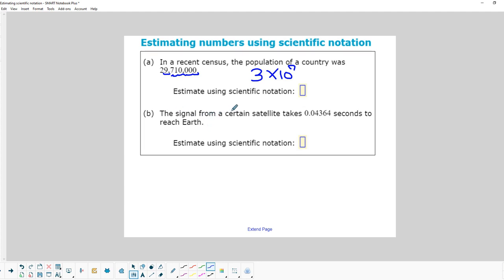A signal from a certain satellite takes this many seconds to reach Earth. So if I move it over two places to get it into scientific notation, that's going to be times 10 to the minus 2 power. Then we're going to just round up to this first digit, which is a 4. The digits behind it are not big enough to cause this to round up to a 5, so it's going to stay the same. 4 times 10 to the minus 2.